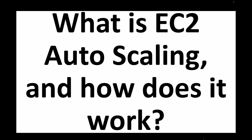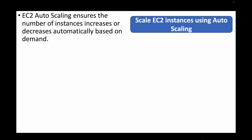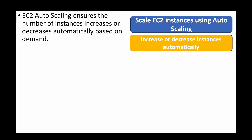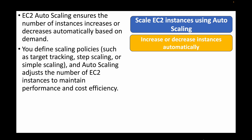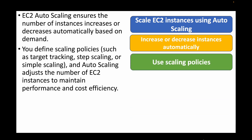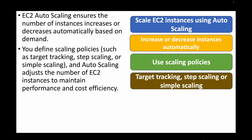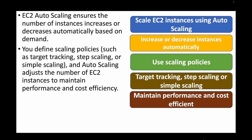The first question is: what is EC2 auto scaling and how does it work? Auto scaling can be used when you want to automate the scaling up and scaling down of your instances. With this service we can ensure we always have the right number of instances, and we can automate increasing or decreasing instances based on certain thresholds. We define a scaling policy like target scaling, step scaling, or simple scaling, and then auto scaling adjusts the number of EC2 instances for us.